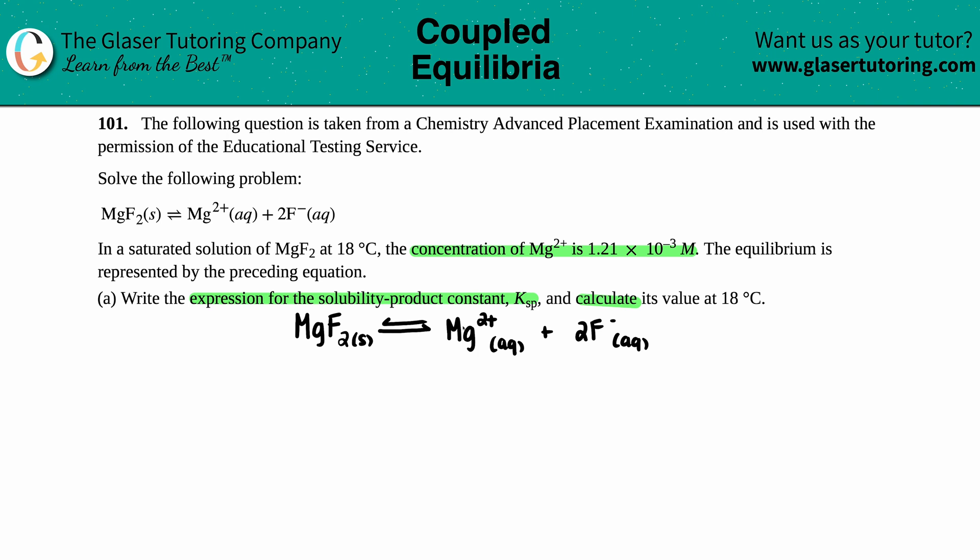Just like any K value, technically it should be products divided by reactants. But since my reactant is a solid, remember solids don't get included into the Ksp value. So in this case, my Ksp is equal to the two products: Mg2+ times F-. And since this is 2F-, it's already balanced for us. I do need to put a 2 up top of the F-.